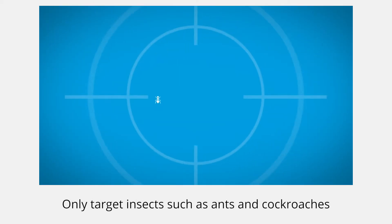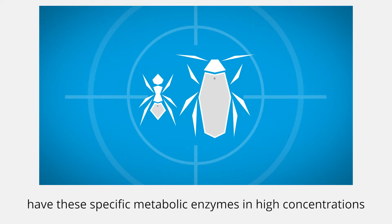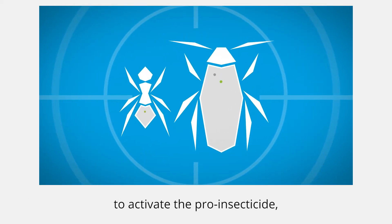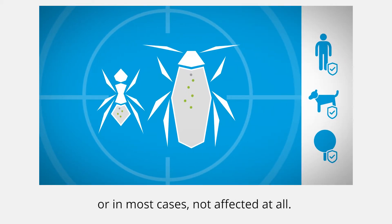Only target insects such as ants and cockroaches have these specific metabolic enzymes in high concentrations to activate the pro-insecticide, which means non-target organisms are hardly, or in most cases, not affected at all.